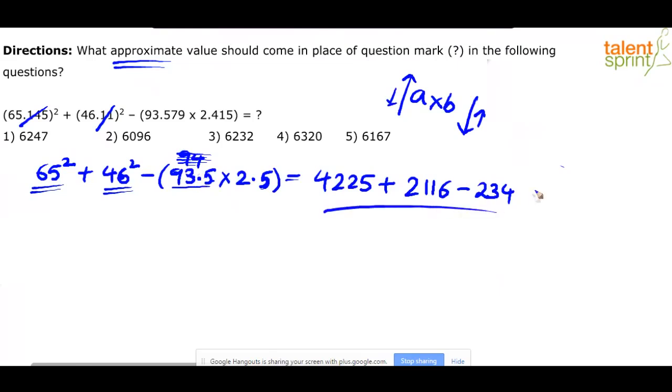Now try to do the calculation here. How much is this? 4,200 plus 2,100 is 6,300. Or let's work only on the hundreds first. 225 and 116. How much is that? 341. 341 minus 234.